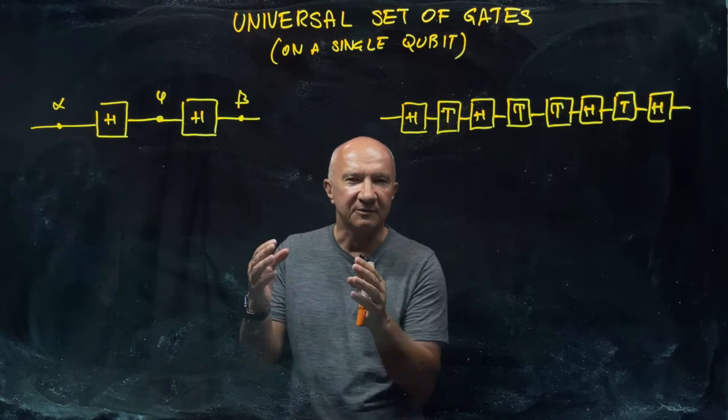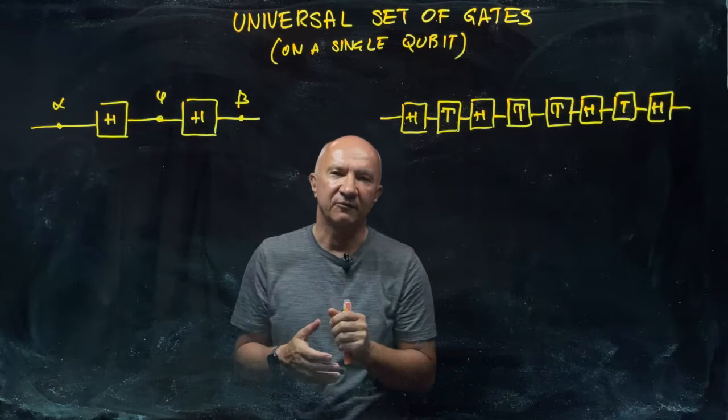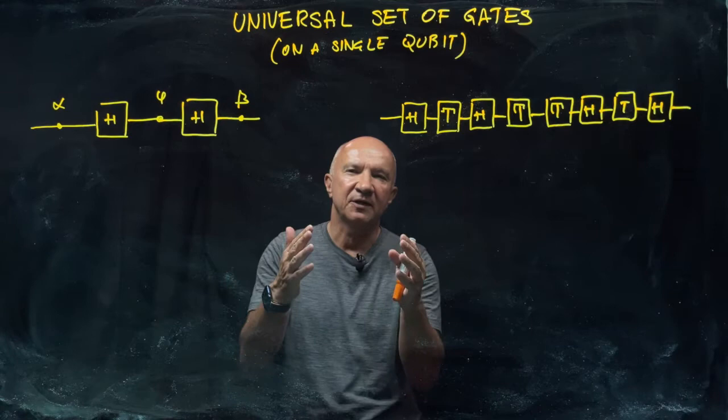In this case, it's unrealistic to expect that with a finite set of gates we can cover the whole continuous set of unitary operations. That's not possible. So we are talking here about approximating any unitary operation on a single qubit with arbitrary precision.